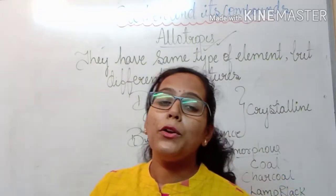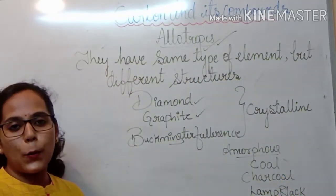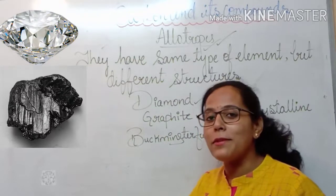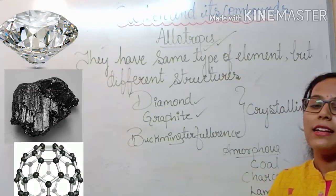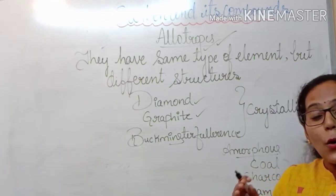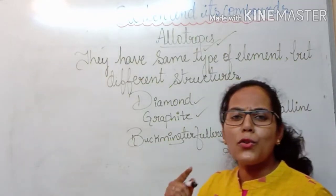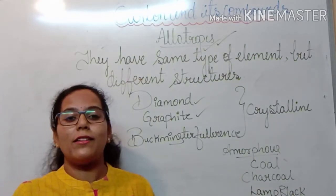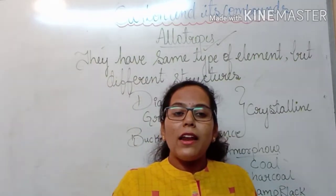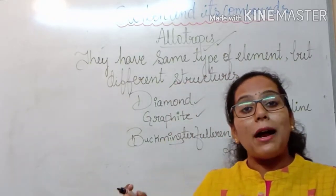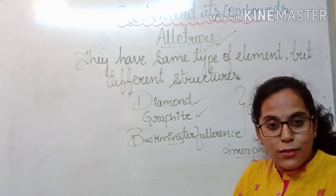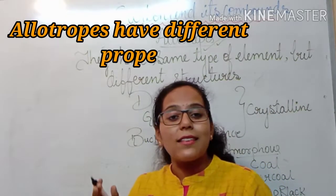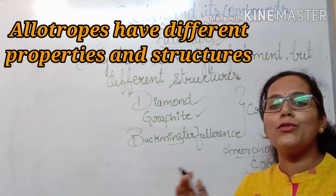So in this session we are going to mainly focus on three types of allotropes: diamond, graphite, and Buckminster Fullerene. These are the three important allotropes of carbon which we are going to study. As I also mentioned, they appear in different states and their properties are also different. Allotropes are made up of the same type of element, but as their appearance is different, the arrangement of atoms inside them is also different, and as a result their properties also differ.